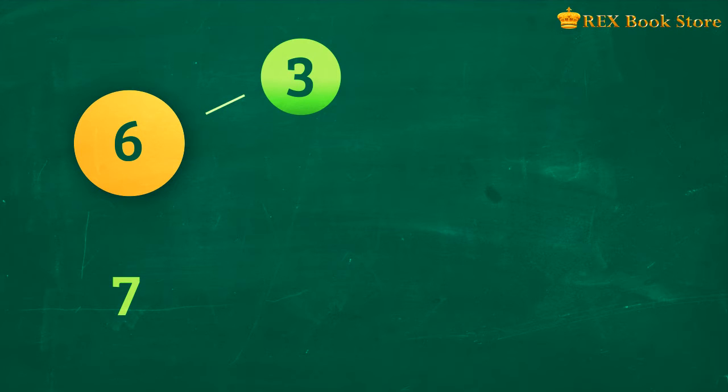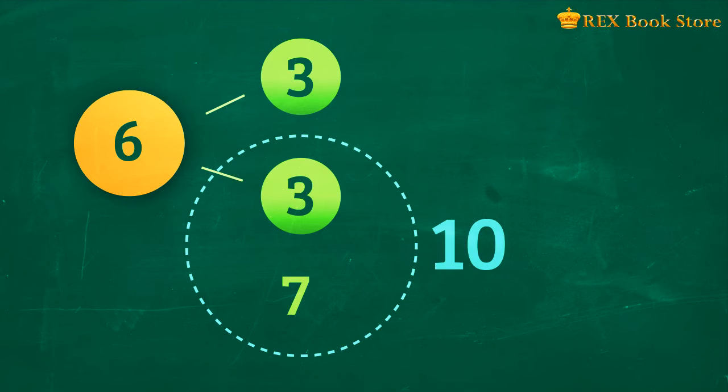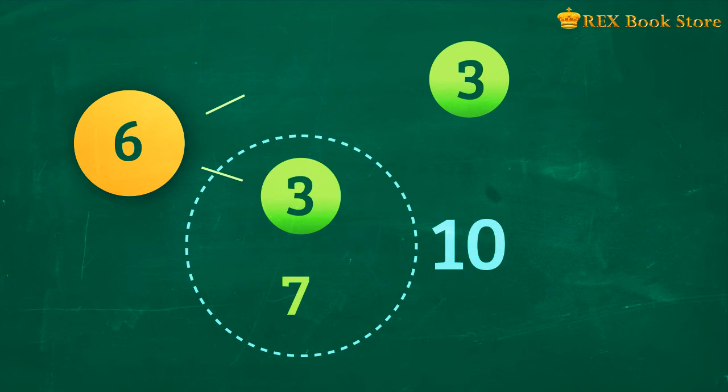We can also use number bonds to help us out. 6 as a whole can be represented by two parts, 3 and 3. 7 and 3 can make 10. So we're left with 3. From this process, we can see that 10 plus 3 is equal to 13.